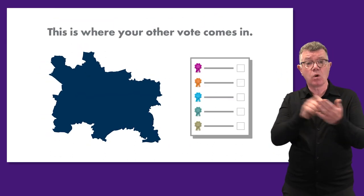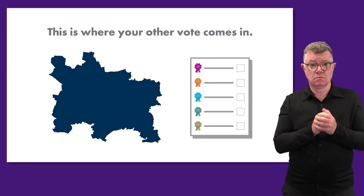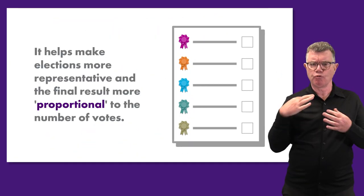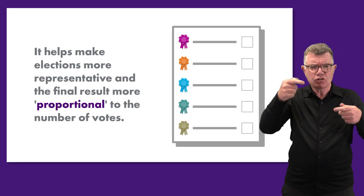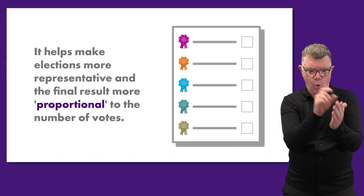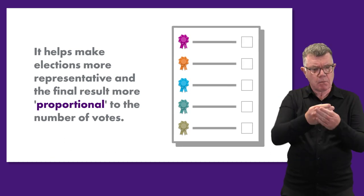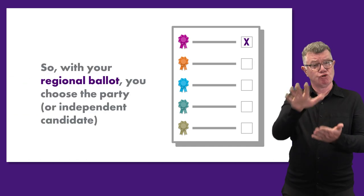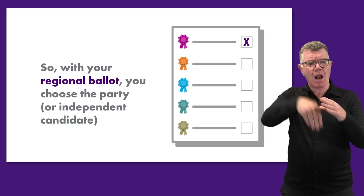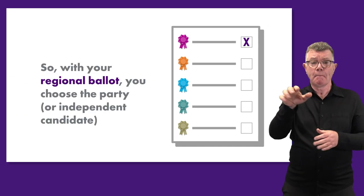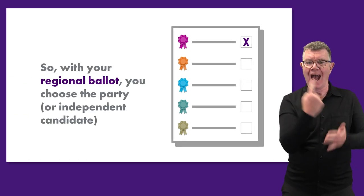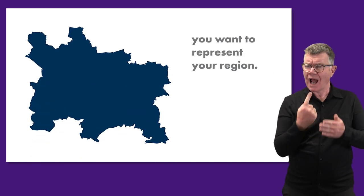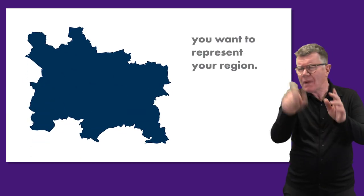This is where your other vote comes in. It helps make elections more representative and the final result more proportional to the number of votes. So with your regional ballot, you choose the party or independent candidate you want to represent your region.